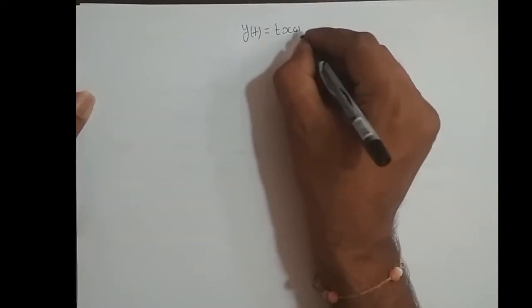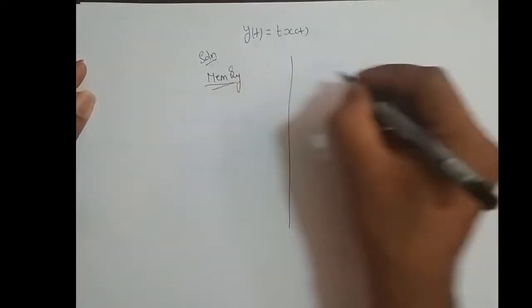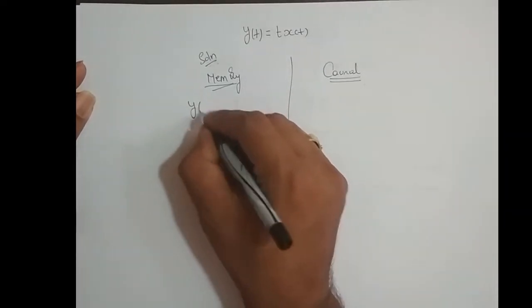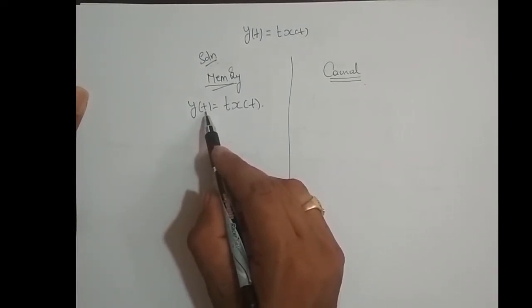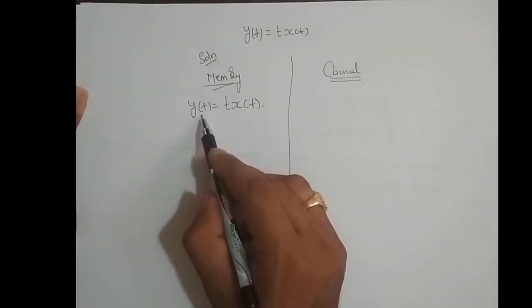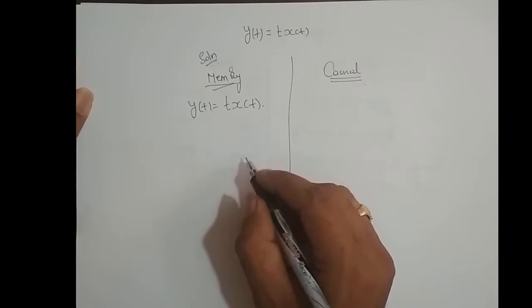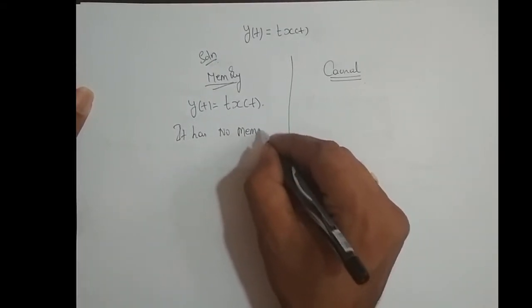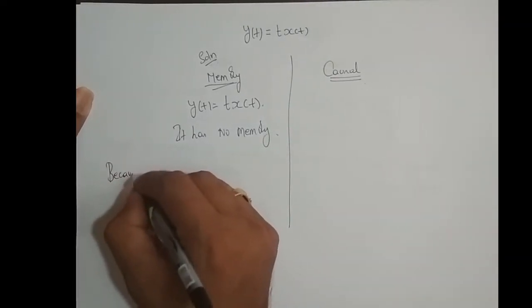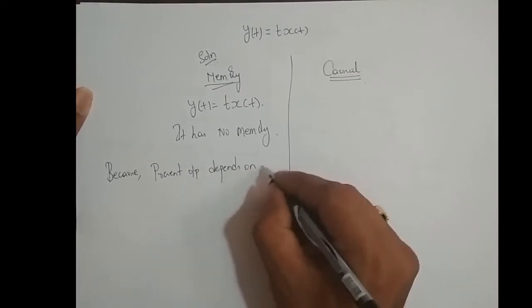Next example: y(t) = t·x(t). First we check for memory. For y(t) = t·x(t), whatever value of t you put across the output, the same value of t comes across the input. So present output depends upon present input. Therefore, the system has no memory, because present output depends on present input.